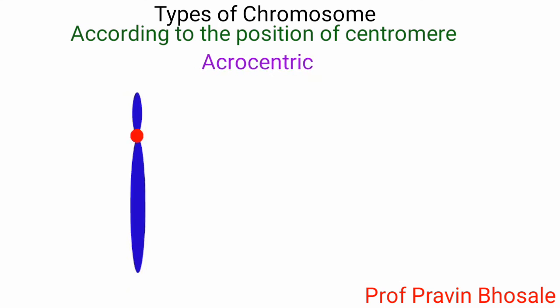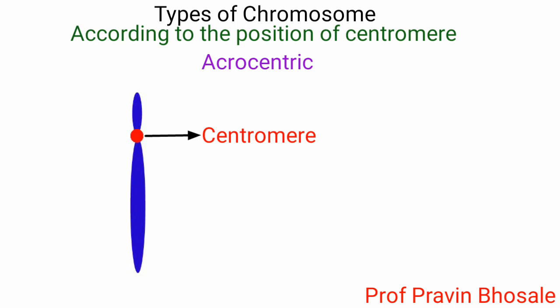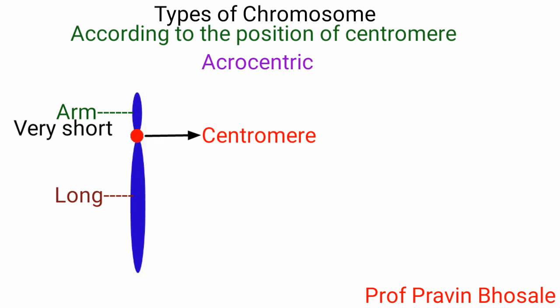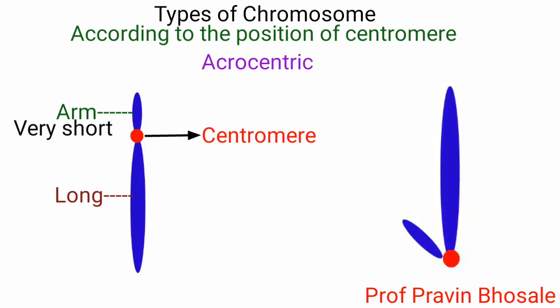Acrocentric: if the centromere is situated near the end of the chromosome, one arm of the chromosome is very short while the other is long. It appears J-shape in anaphase.